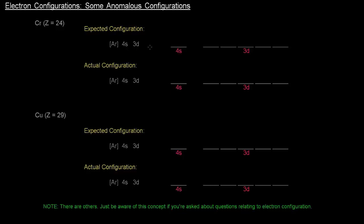As I mentioned in the previous video, there are some anomalous configurations, some weird exceptions to the Aufbau principle, and two of them here are chromium and copper. How exactly are they exceptions? Let's see what we get from the expected configuration using the Aufbau principle, and then see what the actual configuration is and how it relates.